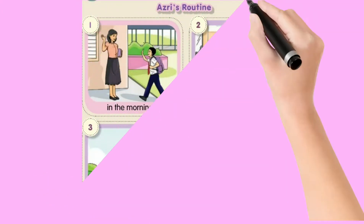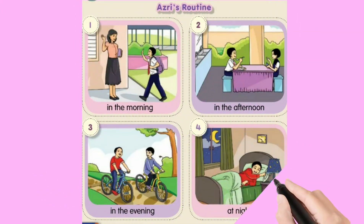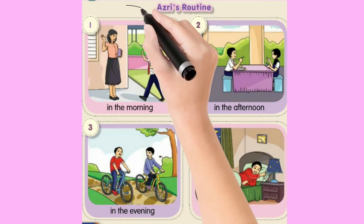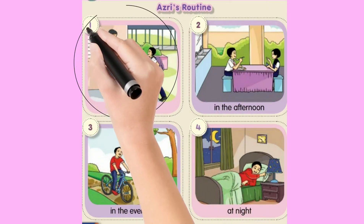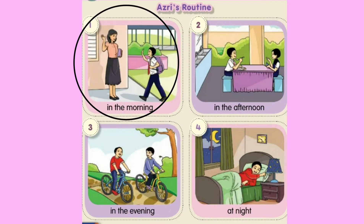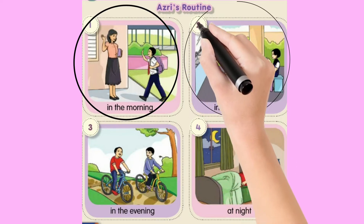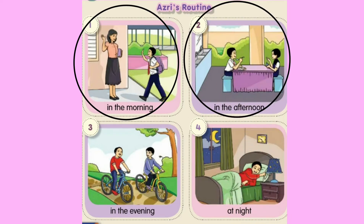Now, we are going to see Azri's routine. Routine is what you do every day. In the morning, Azri goes to school. In the afternoon, Azri eats his lunch at school.